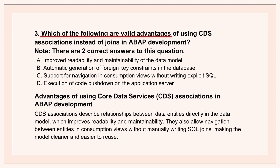The first advantage is all about readability and maintainability — it makes the data model so much easier to understand. With associations, the relationships between your different data entities are defined right there in the model itself. You're not writing join conditions over and over again in every single query. The model itself knows how things connect — it's more self-describing, more intelligent, making it way easier to grasp the connections and much easier to maintain down the line.